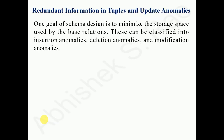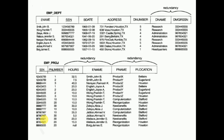The problems with poor schema design include redundant information in tuples and update anomalies. The goal of schema design is to minimize storage space used by base relations. We classify anomalies into insertion anomalies, deletion anomalies, and update anomalies (also called modification anomalies).